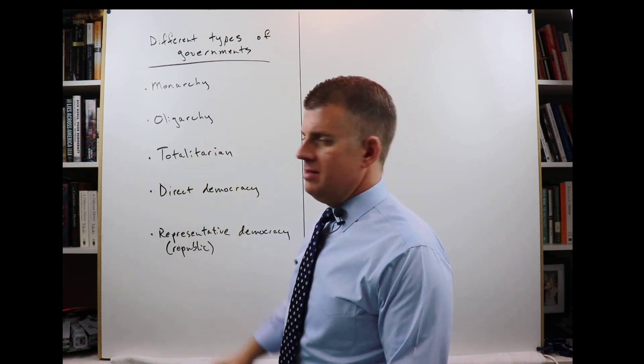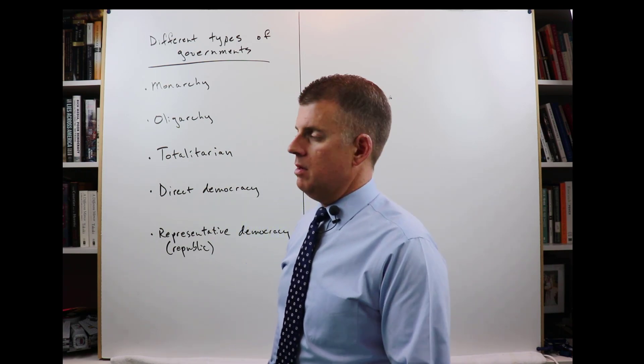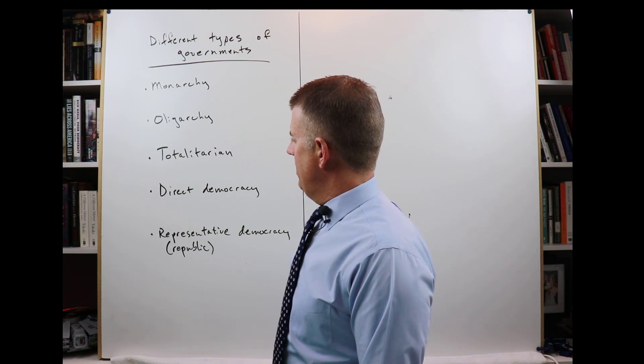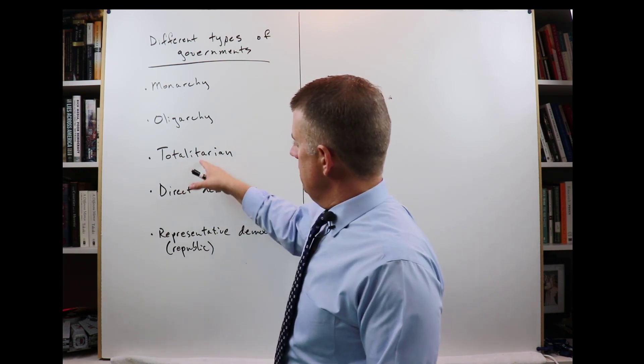A totalitarian system or government—two easy examples are the Nazis in World War II and the Soviet Union, especially under Stalin. Those are totalitarian systems.